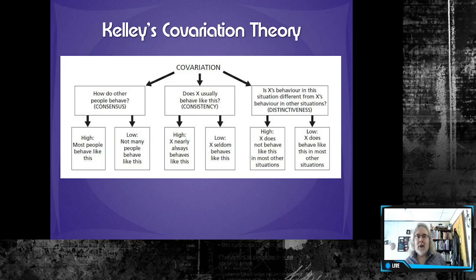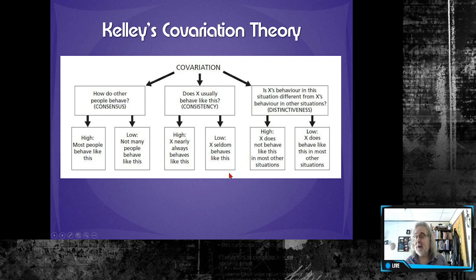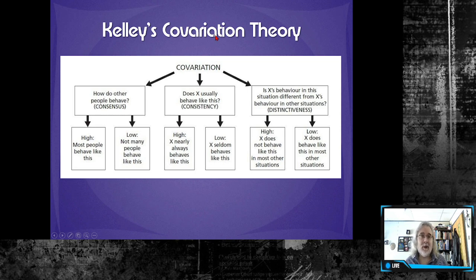In this video I want to talk about Kelly's covariation theory. It's a simple theory, but when you look at this diagram it looks like it's going to be complicated. Let's start off with the name: covariation. Covariation is a term you're probably not familiar with — it's really a statistical term, and we won't get into how you measure covariance.